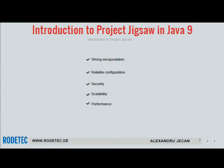Project Jigsaw has been merged into Java 9 at the beginning of this year, so if you download JDK 9 you already have Project Jigsaw included. The most important characteristics are strong encapsulation, reliable configuration, security, scalability, and performance. Strong encapsulation allows a component to declare which of its public types are accessible outside the module and which are not — it hides the module's internals and is achieved using modules in Java 9.